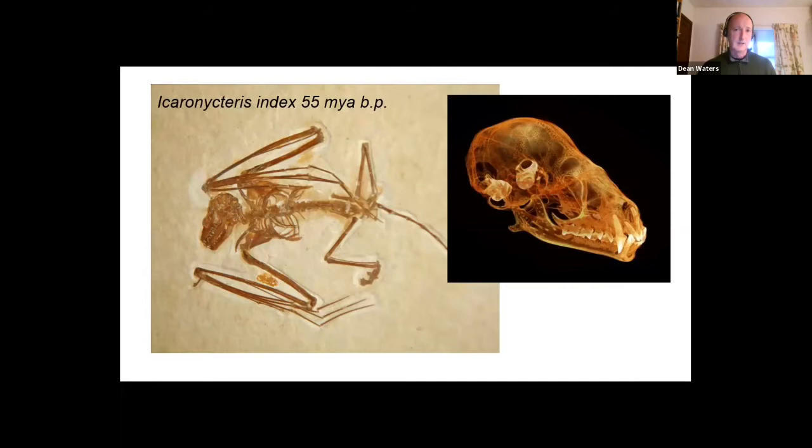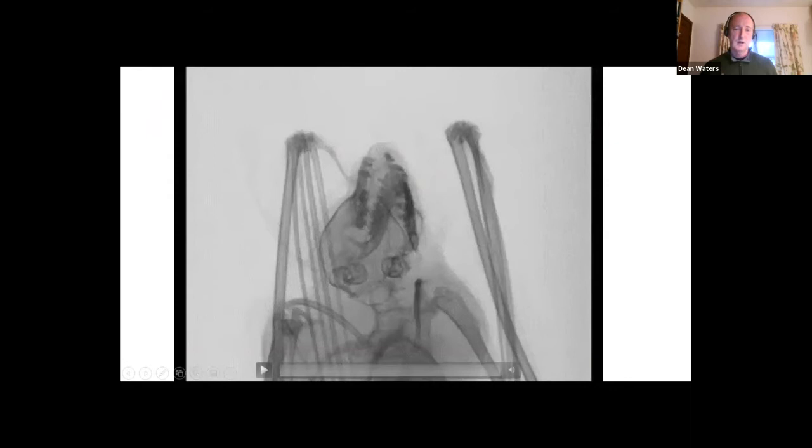What you find is that they actually have very pronounced cochlea highlighted in this image here. The cochlea is the inner ear, the bit that acts for sound reception and balance. In echolocating bats, the cochlea are more developed, they are larger, because the bats need them to process sound. So Icaronycteris was not only a fully formed bat in terms of flying around, but also these cochlear structures are very well developed, so we know it was also an echolocator.